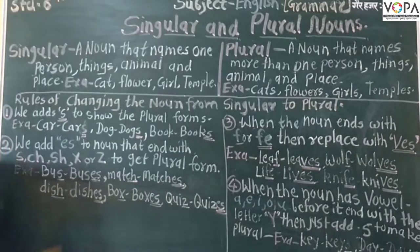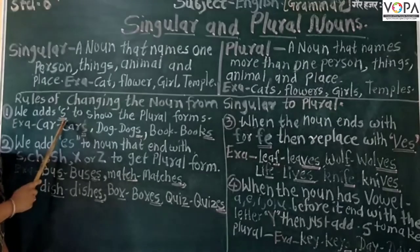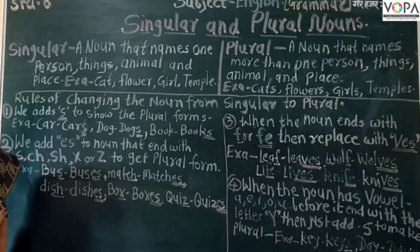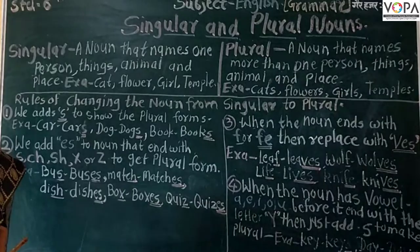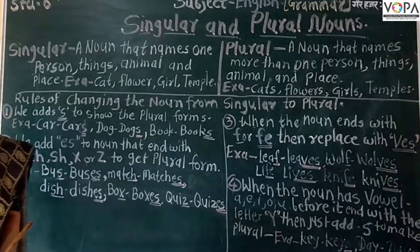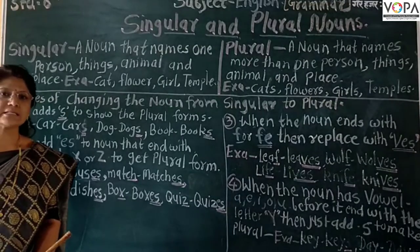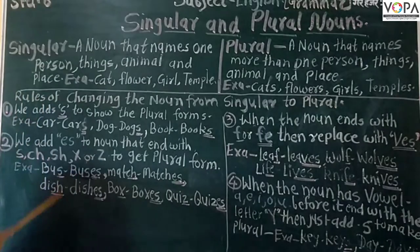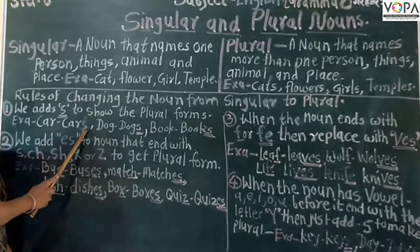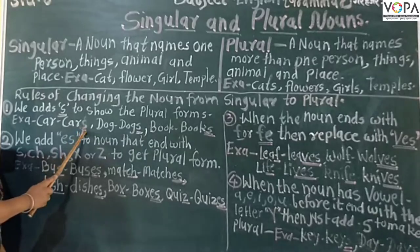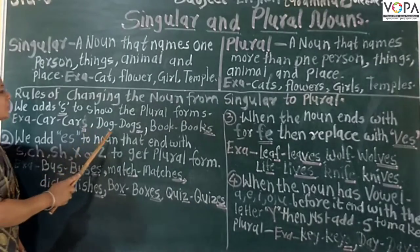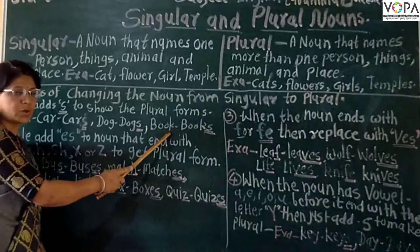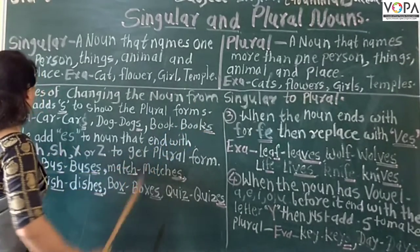To make a plural noun, we add S to show the plural form. For example: car — cars. We add S to car. Dog — dogs. Book — books.